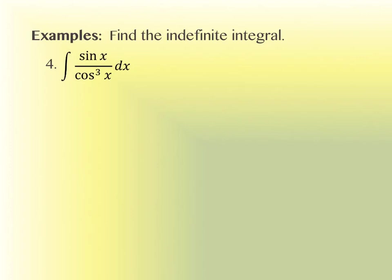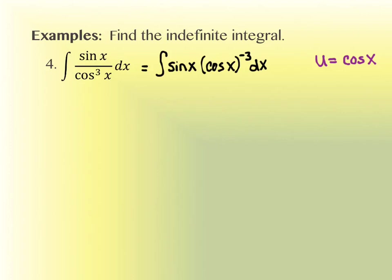This next one does not look like it has an inside versus outside — it looks like a quotient. We could change it to look more like a product by moving the denominator into the numerator. When you do that, you can put the negative 3 on the outside. So what would u be in this problem? Just the cosine of x — that's what's inside of the power negative 3.